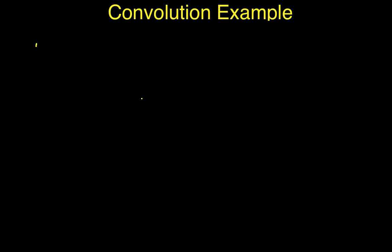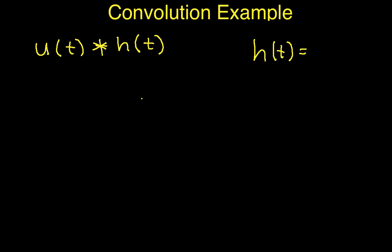This video will provide an example of how to compute a continuous-time convolution. We're going to work with fairly simple signals so that the concepts will be clear. The convolution we're going to do is convolving the unit step function with a system impulse response h of t. h of t equals e to the minus a t for t greater than or equal to zero, and it's zero for t less than zero. So this is a decaying exponential that starts at zero.